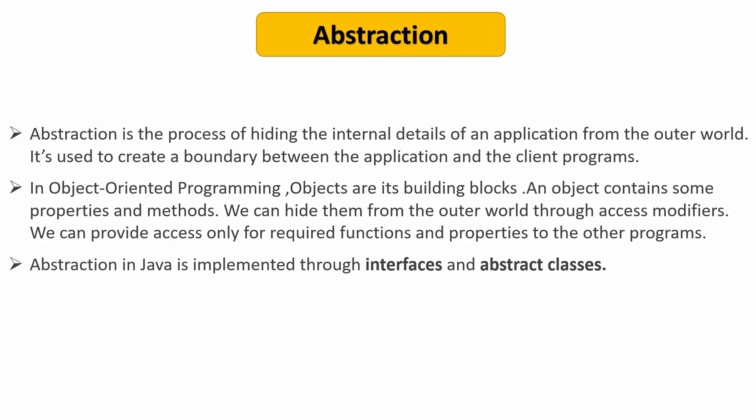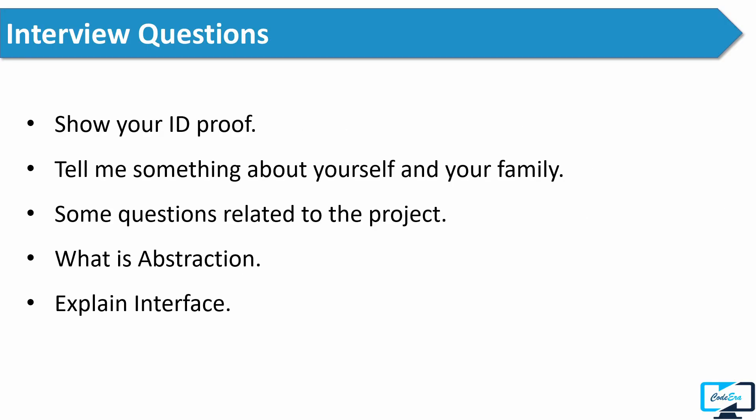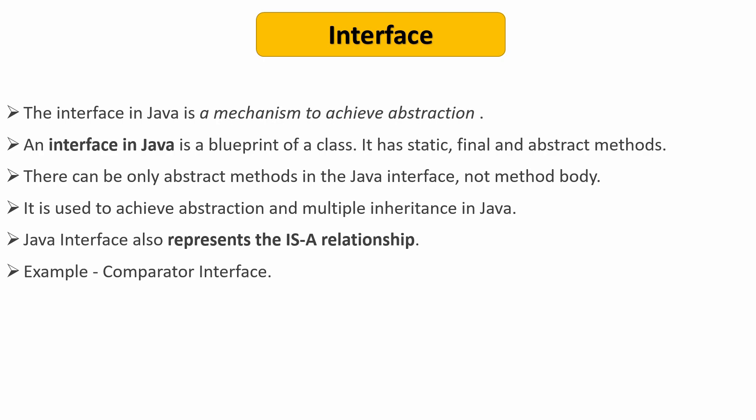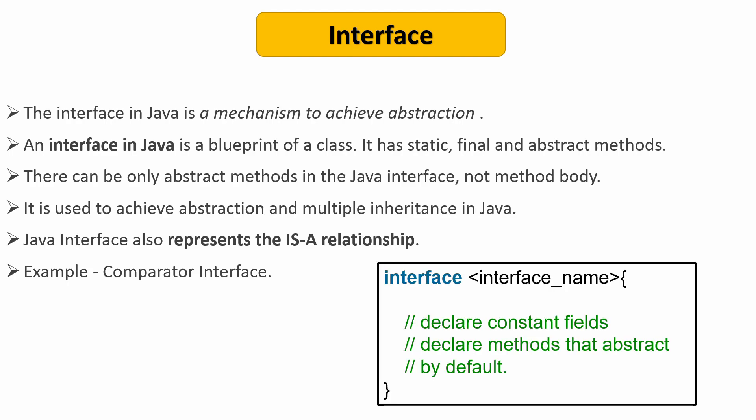After that, the interviewer asked him to explain interface. You can say the interface in Java is a mechanism to achieve abstraction. An interface is also a blueprint of a class which has static, final, and abstract methods. In an interface there can be only abstract methods, not the method body. It is used to achieve abstraction and multiple inheritance in Java. The interface also represents the 'is-a' relationship. An example of an interface is the Comparator interface, and here you can see the syntax to define an interface.